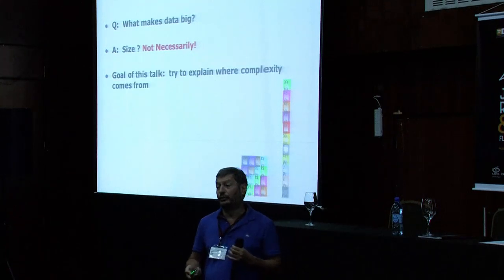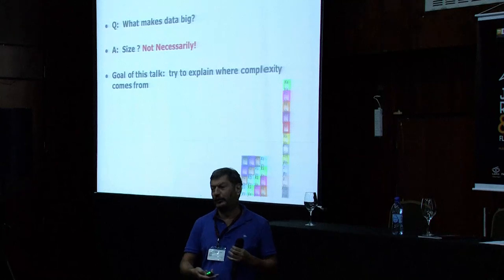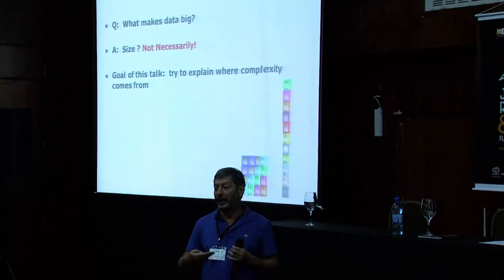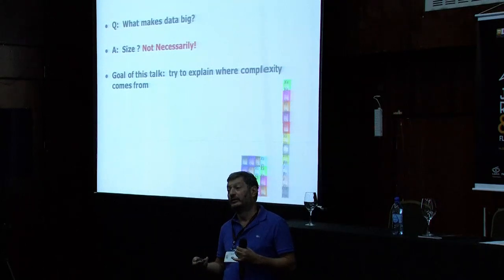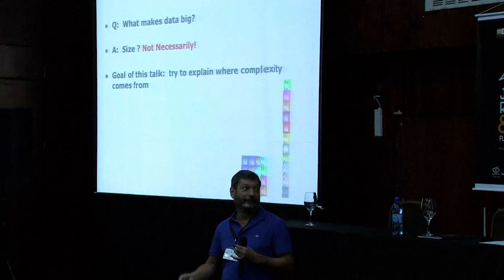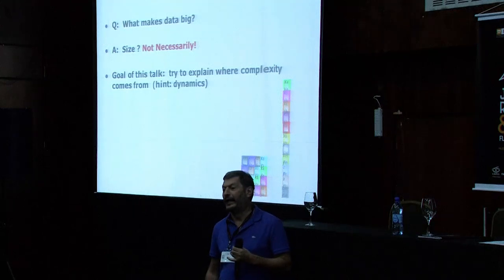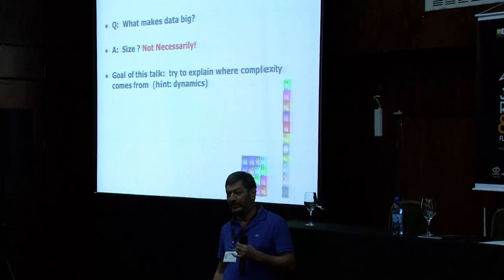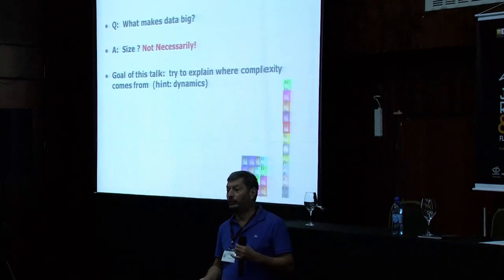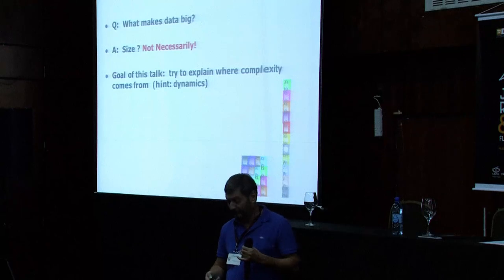This is what I'm trying to do in the first part of the talk: try to understand why, for control or for systems theory, big data is maybe just a few hundreds. The hint is dynamics — the thing that makes our problems different from regular machine learning problems, the thing that makes our problems really hard, has to do with dynamics.